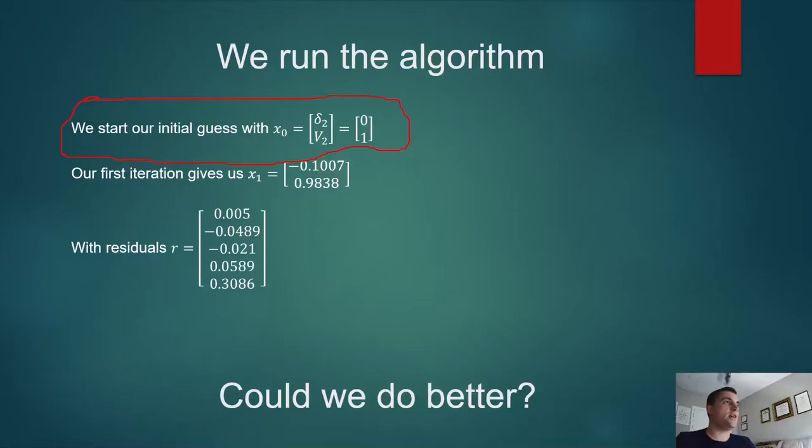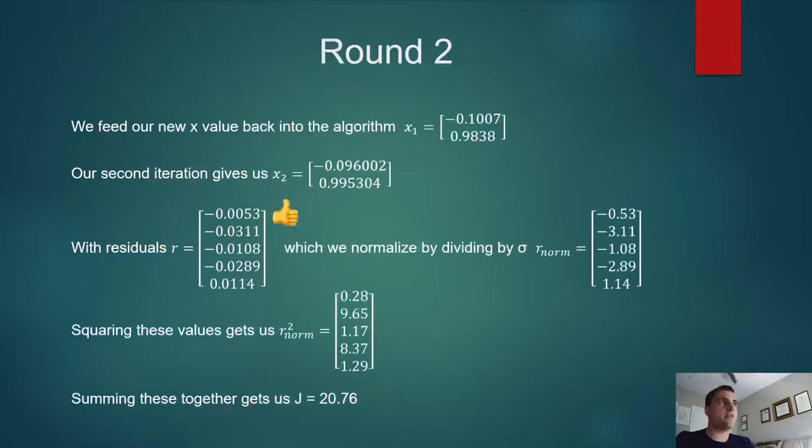We run it and we get our first iteration. We get this for x1 and this for our residuals. While these residuals are low, we can probably do better. It's always a good idea when you have a nonlinear system to run the equation at least twice.